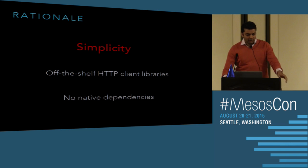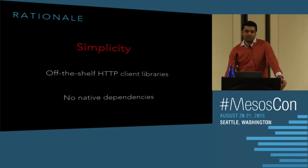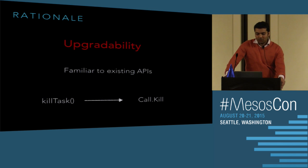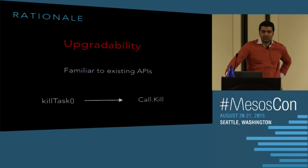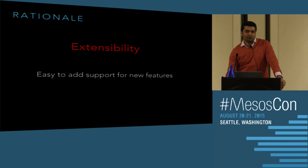Three guiding principles shaped the design. First, simplicity: being a good standard HTTP API means you can use off-the-shelf HTTP client libraries and no longer depend on libmesos. You can write a framework in more languages — as long as an HTTP library exists for a language, you're good. Second, upgradability: the new API looks very similar to the old one. For example, a kill task call becomes call.kill — very familiar, so it doesn't take much to learn. Third, extensibility: the fundamental building blocks of calls and events make it easy for developers. Adding a new call or event is just adding a new field in the protobuf — no boilerplate at all.